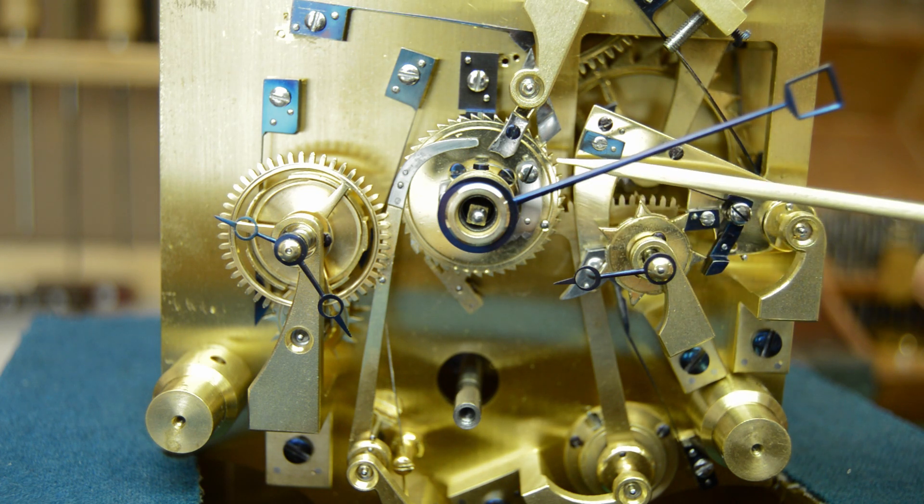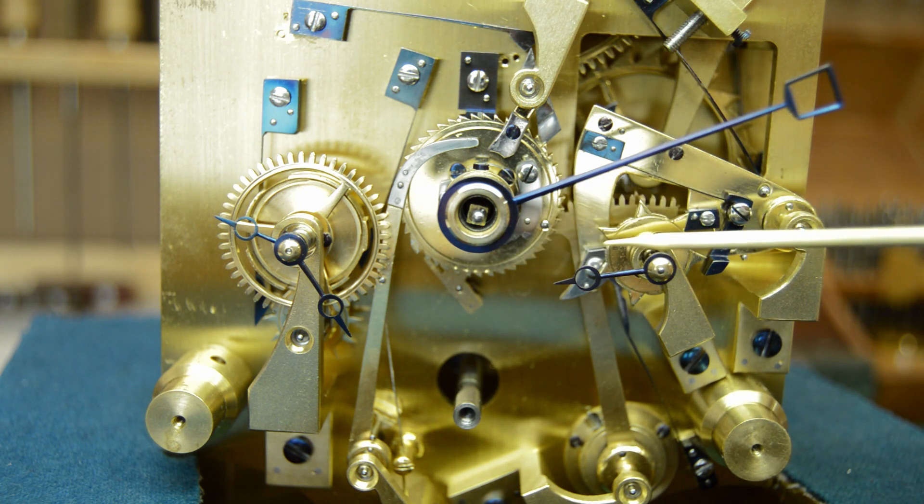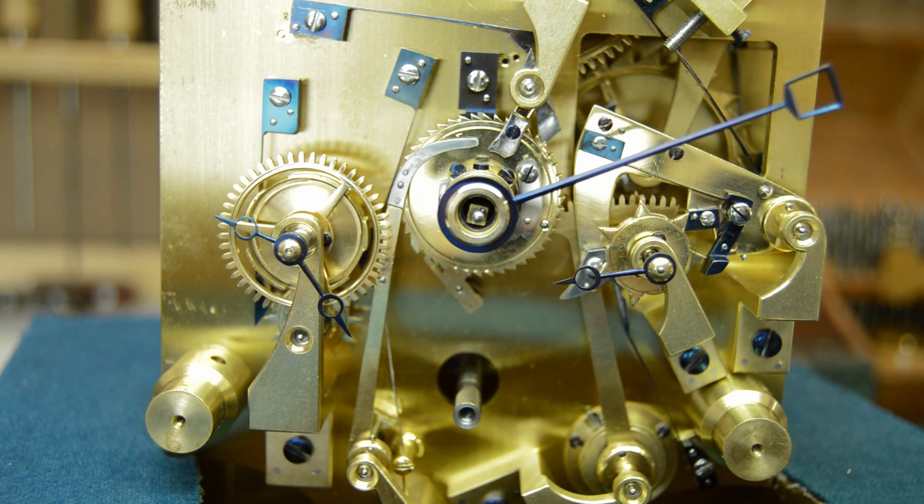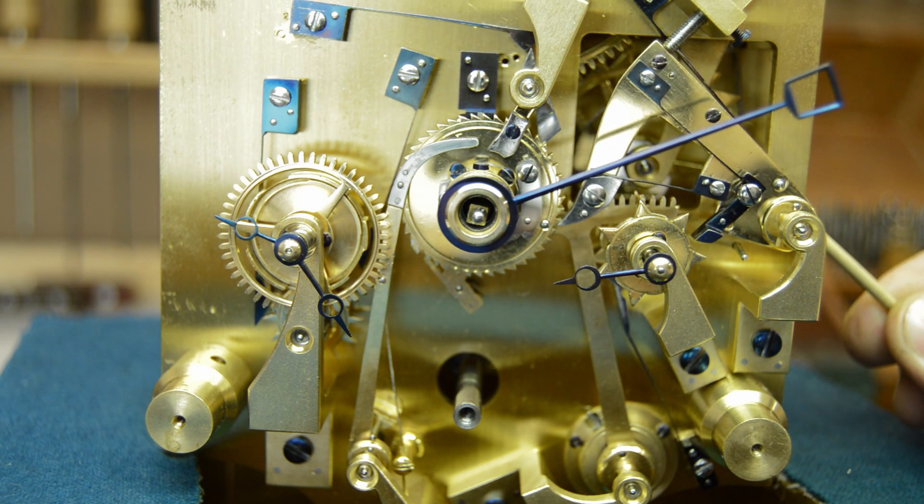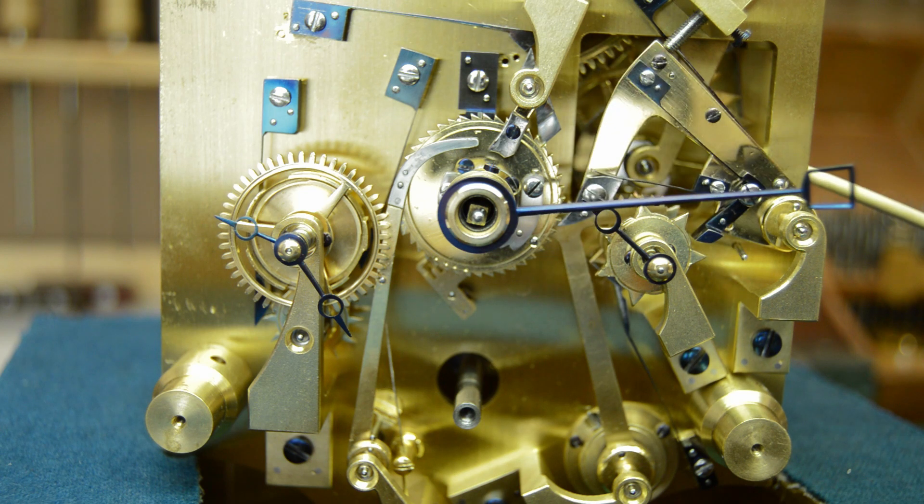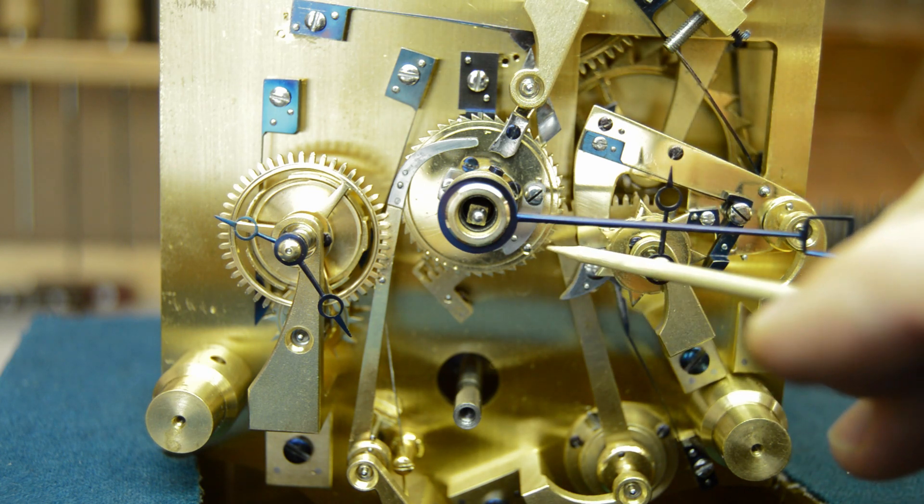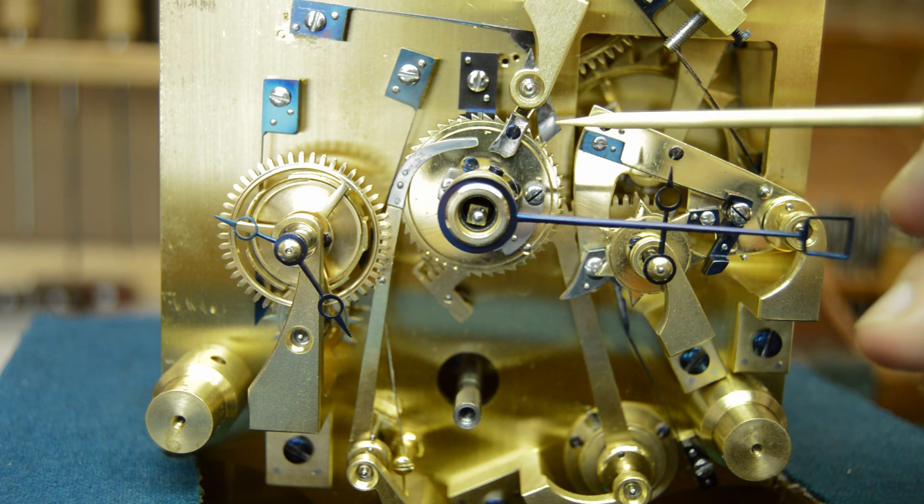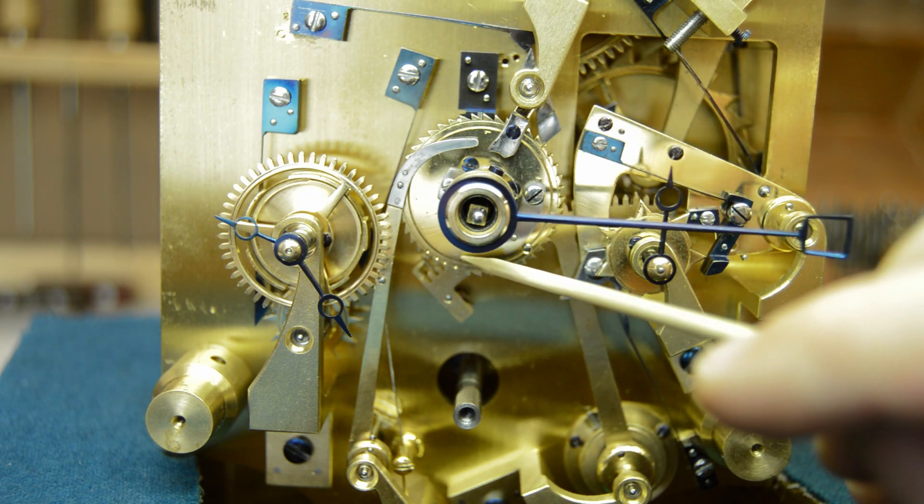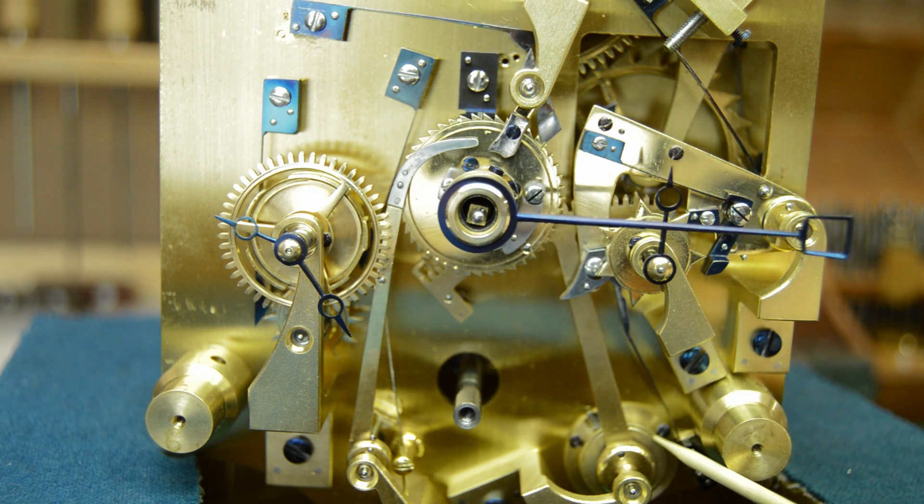In the centre here you've got the retrograde function. This is the main calendar wheel and this is ratcheted on by this pole here. So every pump of the calendar system which occurs once every 24 hours, it will push it on by one. You can see this catcher is flicking over the top and it's getting ready to push it on.